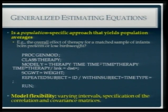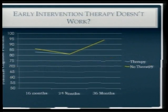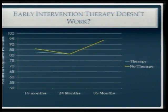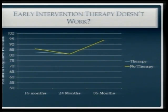Looking at the results with GEE: the blue line is the group who received therapy and the yellow is the group who didn't. You might look at this and conclude early intervention doesn't work because these lines are almost exactly on top of each other — there's no difference between the two groups. However, you could also say this population-average approach may not be the best approach, because it's telling you on average there's no effect on population-average cognitive function.